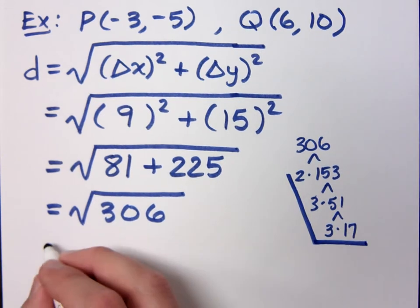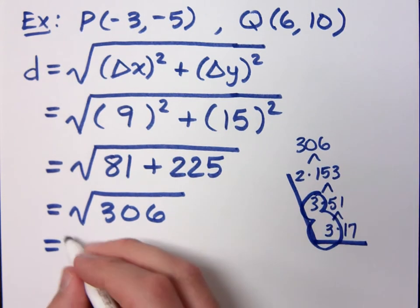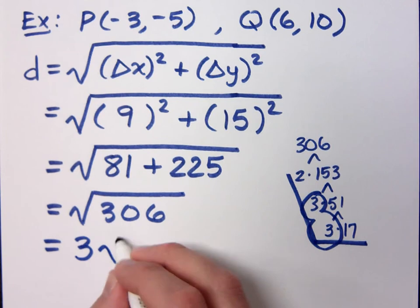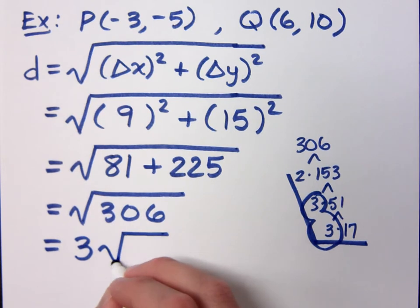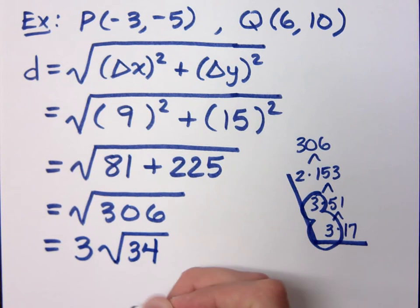What gets to come out of the radical? You have a pair of 3s. So if 3 comes out, what stays on the inside? 34. 17 times 2, which is 34 units.